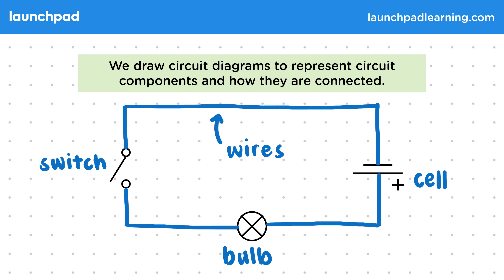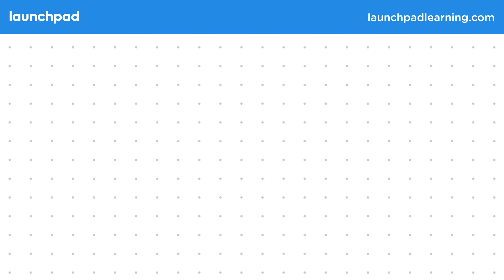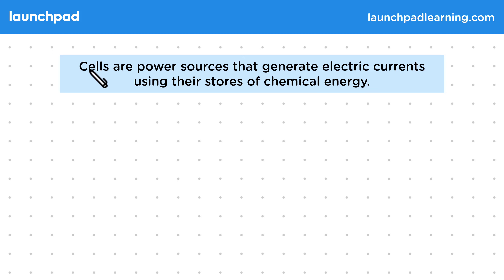For your exams, you need to be able to recognise and draw many different circuit symbols. So let's go through some key components and their symbols. Let's learn more about the power source we just saw. Cells are power sources that generate electric currents using their stores of chemical energy.